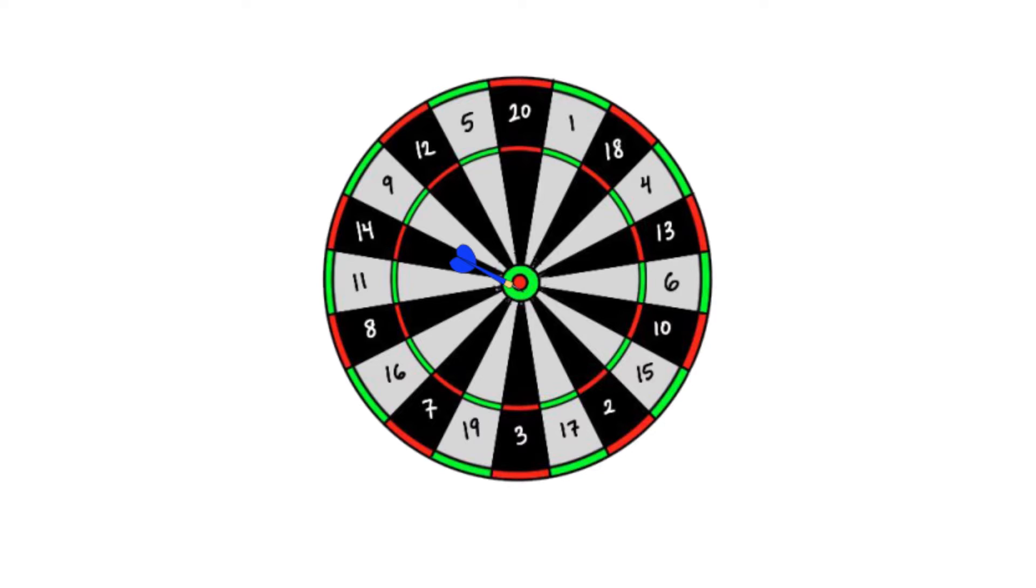So the bullseye should be big enough that it's possible to hit it, but small enough so that if we hit it, it's due to skill. There has to be a balance.